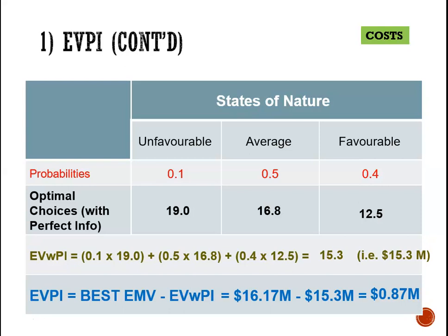This gives us an upper limit for negotiations. Because since we know that perfect information does not exist, it means we would not be willing to pay anybody $870,000. How much we are willing to pay each person depends on how much we rate their information, and that would decide how close to $870,000 we are willing to go. But nobody would get $870,000 from us.